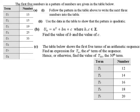Part B. uₙ equals n squared plus bn plus c, where b and c are elements of ℤ, so b and c are integers — positive or negative whole numbers. Find the value of b and find the value of c.